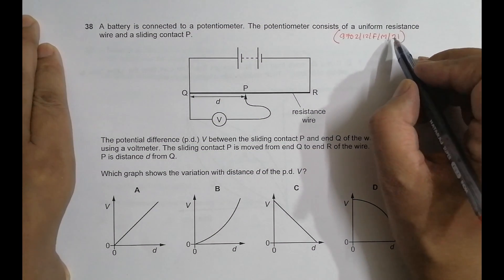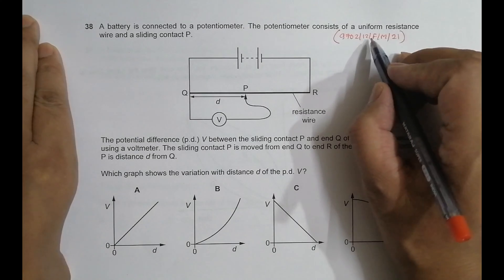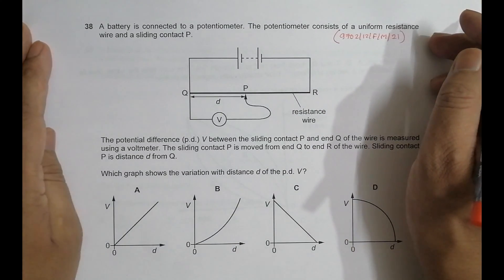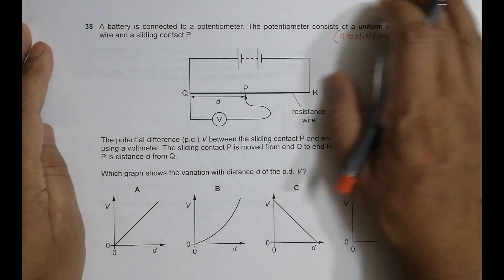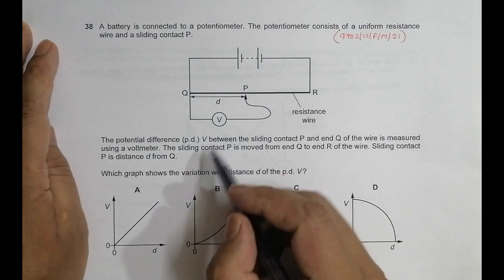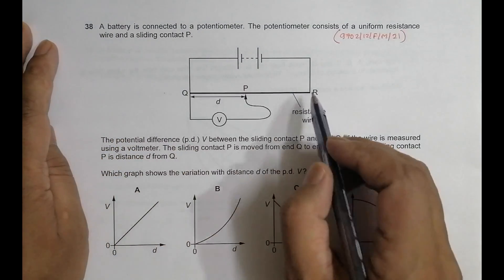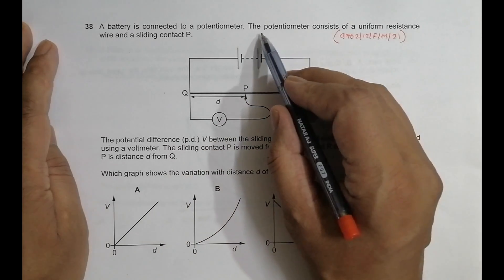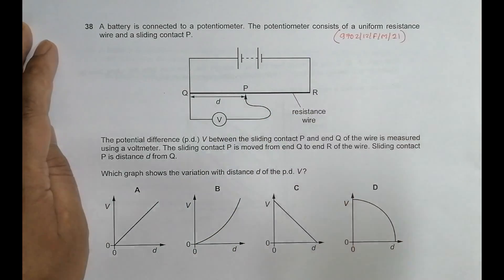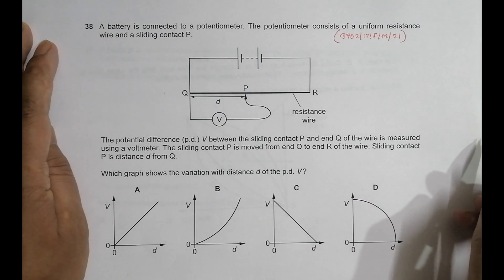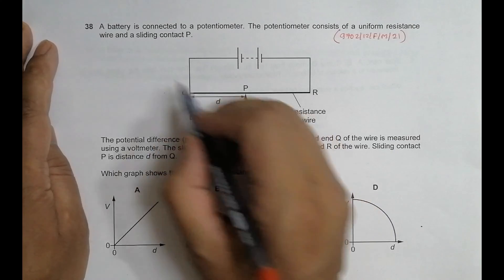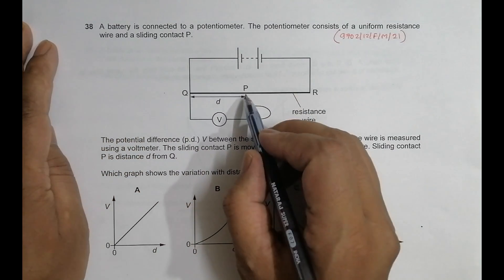So hello folks, this is 2021 February-March session paper 1-2, and the question number is 38. As you can see, the question belongs to the chapter current electricity. It says a battery is connected to a potentiometer, so this is a potentiometer and this is a battery. The potentiometer consists of a uniform resistance, so uniform means that its thickness, its texture, its chemical structure all are the same, and a sliding contact P, so this contact can be slid here and there as you can see in the instruments in your labs also.